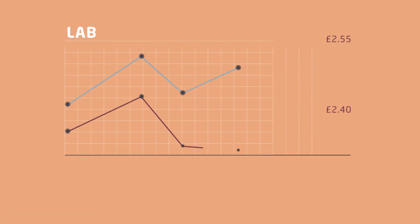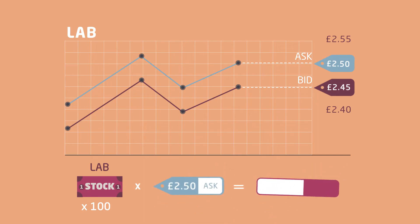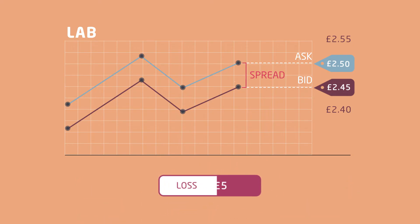If Pip buys 100 Lab shares at £2.50, remember, share prices change all the time. Her trade will cost £250. But if she decides to sell them immediately, she would sell at £2.45 each. So would give back £245, and thus would lose £5.